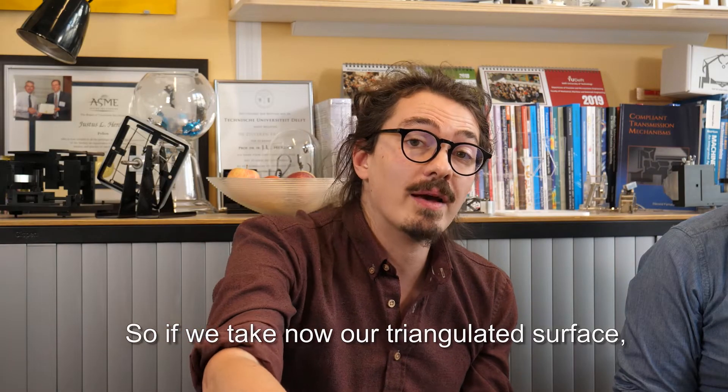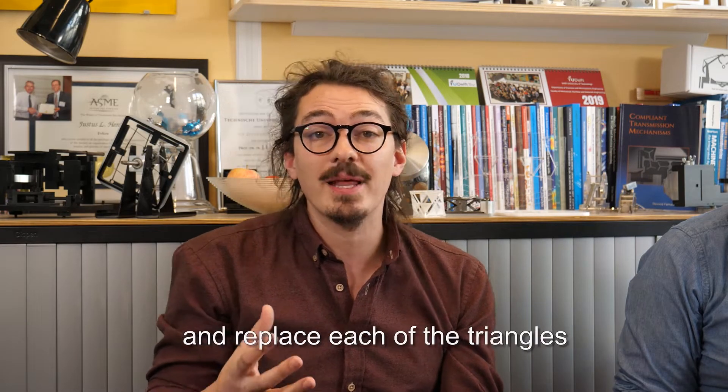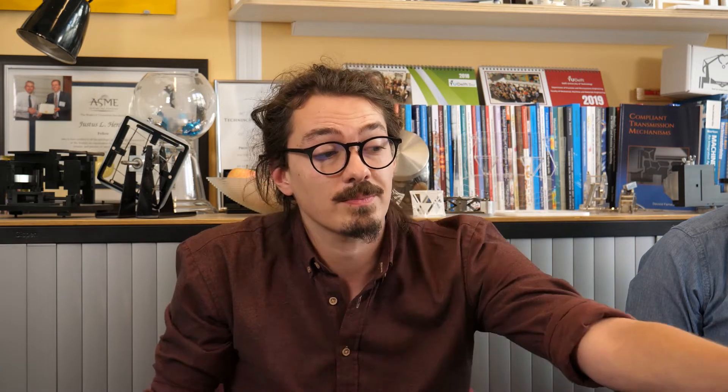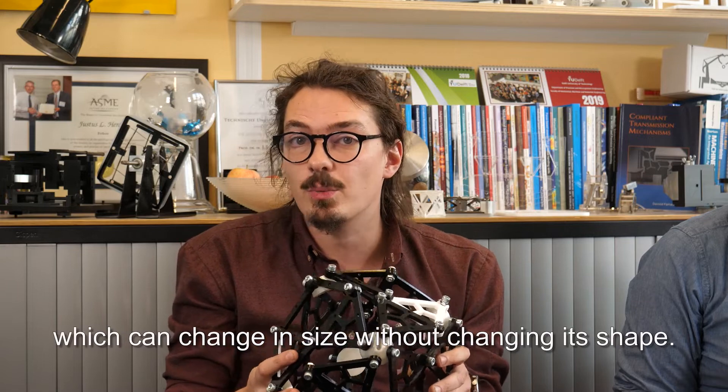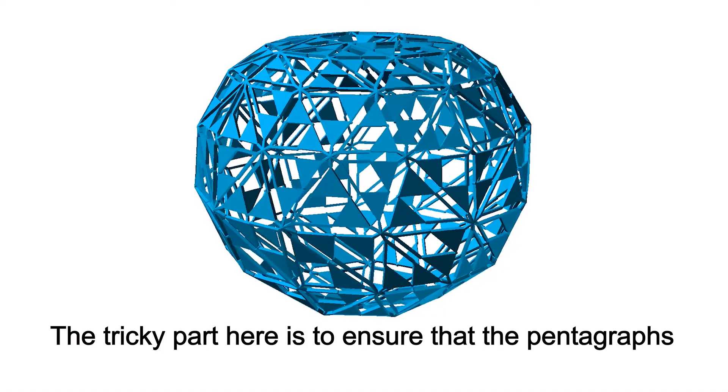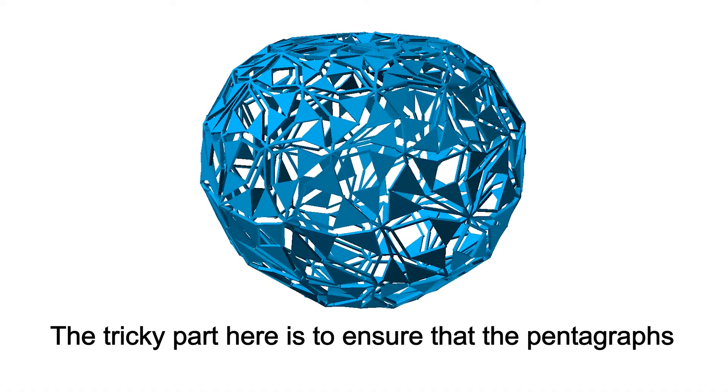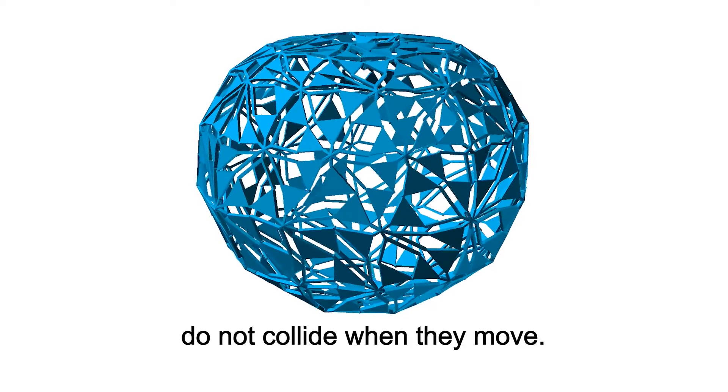So if we now take our triangulated surface and replace each of the triangles with these pentagraphs, then we obtain a surface which can change in size without changing its shape. The tricky part here is to ensure that the pentagraphs do not collide when they move.